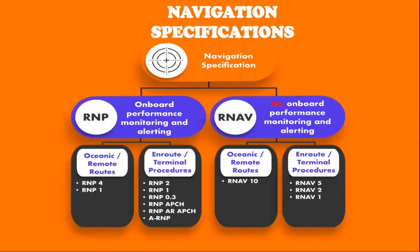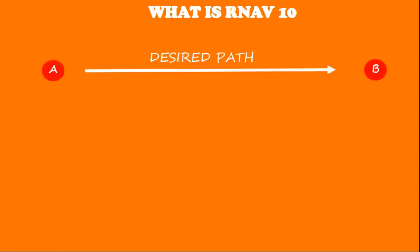RNAV-5, also known as BRNAV, is defined as RNAV that meets a track-keeping accuracy equal to or better than plus or minus 5 nautical miles for 95% of the flight time. RNAV-1, also known as PRNAV, meets a track-keeping accuracy of plus or minus 1 nautical mile for 95% of the flight time. Specific approvals are required for RNAV operations. RNAV-10 is used for oceanic and remote navigation, whereas RNAV-5, RNAV-2, and RNAV-1 are used for en route and terminal applications. The number in RNAV-10 means the aircraft must stay accurately on track within 10 miles, so the smaller the number, the more accurate your aircraft equipment needs to be to fly that procedure.